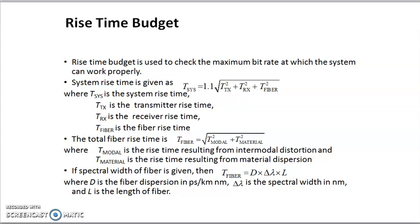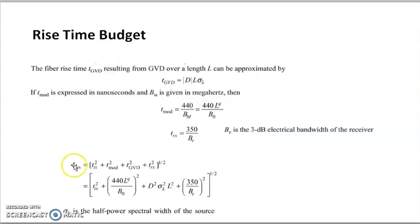The total rise time of the link is the root sum square of the rise time from each contribution. This total rise time depends upon four elements: one is the transmitter rise time, another is the group velocity dispersion rise time, then the modal dispersion rise time, and finally the receiver rise time. These four factors are considered to obtain the total rise time.